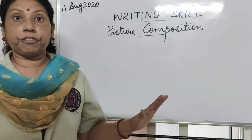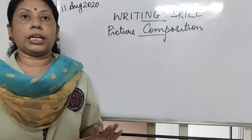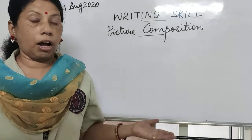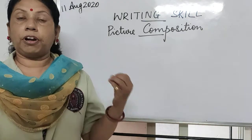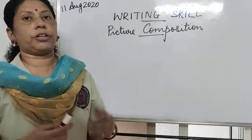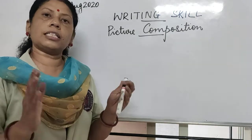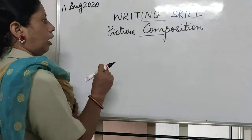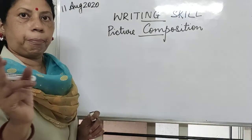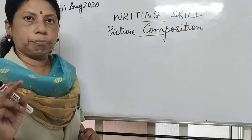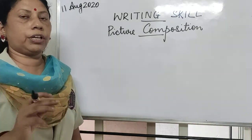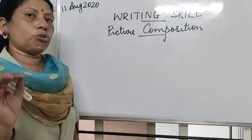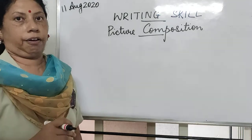It is full of greenery. You can see green grass and beautiful flowers. So let us write those small sentences and frame them. Today I will not write in points because in picture composition we are not supposed to write in points. So today we will make it as a paragraph.